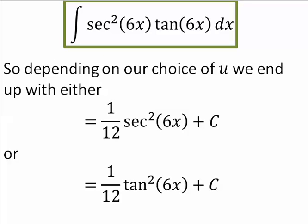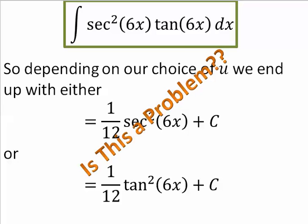So depending on our choice of u, we end up with secant squared or tangent squared. And you might wonder, is that a problem? Not really.